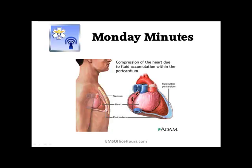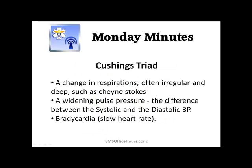So that's Beck's triad — cardiac tamponade is the main issue, and those are the three things you're going to see. Now, Cushing's triad is another set of three primary signs, and this is usually due to an increase in intracranial pressure or ICP. Those three signs are going to be Cheyne-Stokes respirations — that irregular and deep type of respiration — and a widening pulse pressure, where we're talking about an increase in the patient's systolic blood pressure rather than a decrease, with either a decreased or normal diastolic blood pressure.